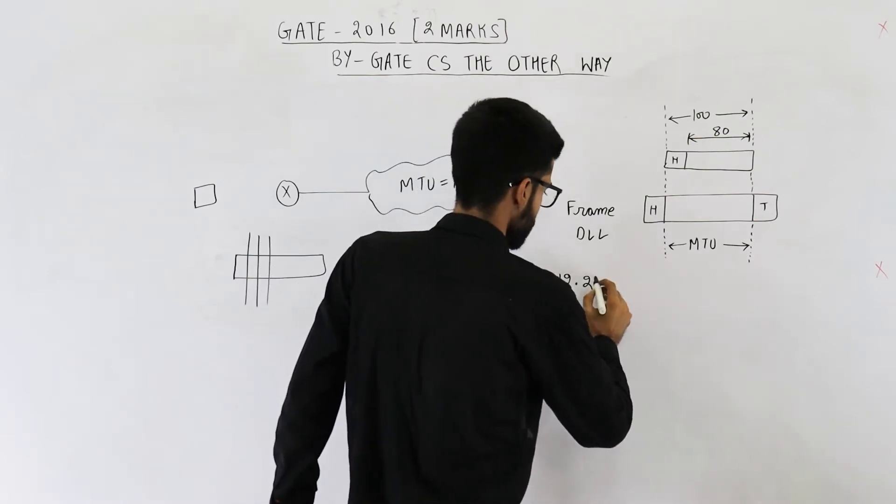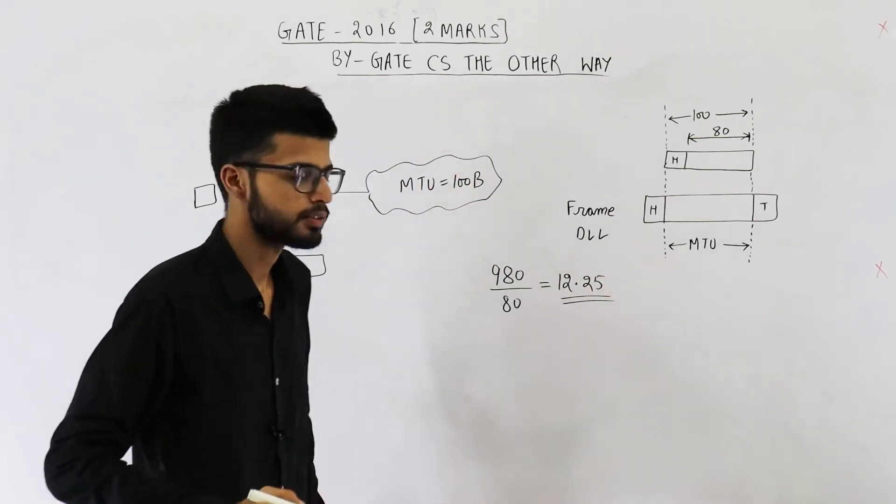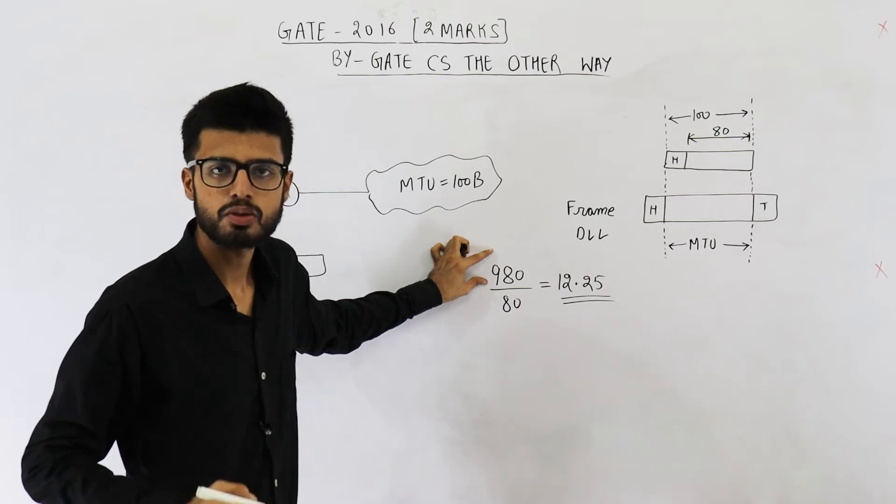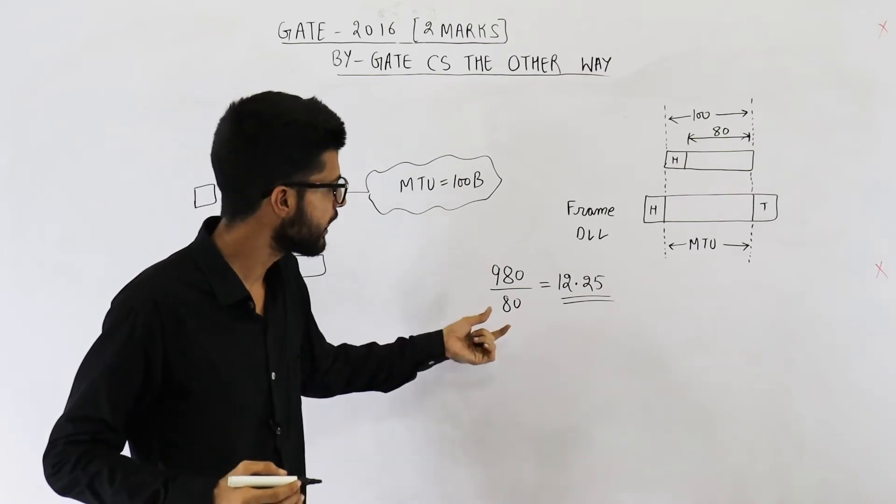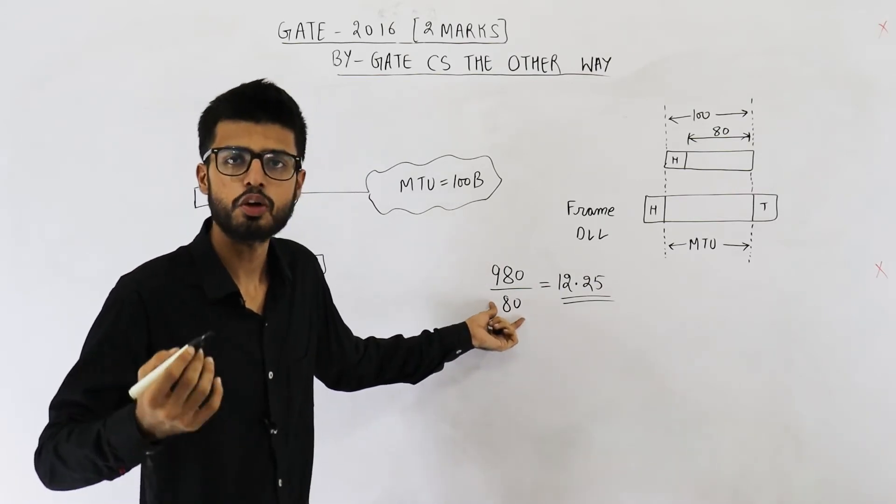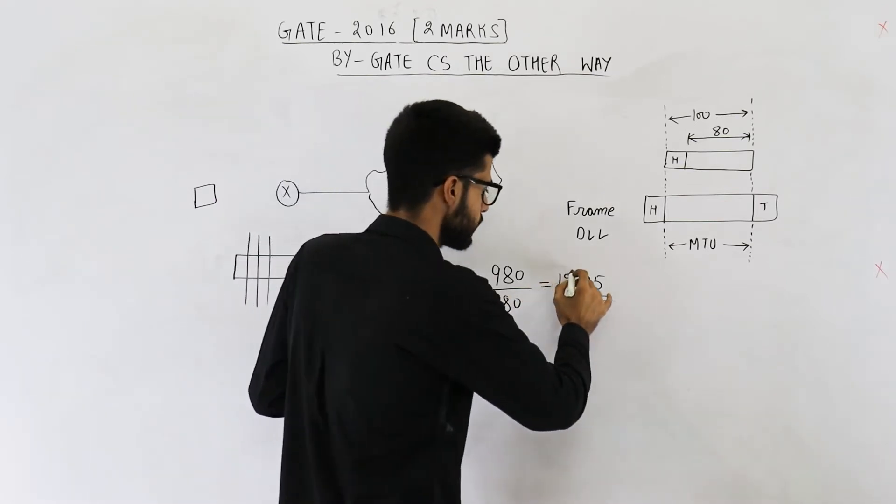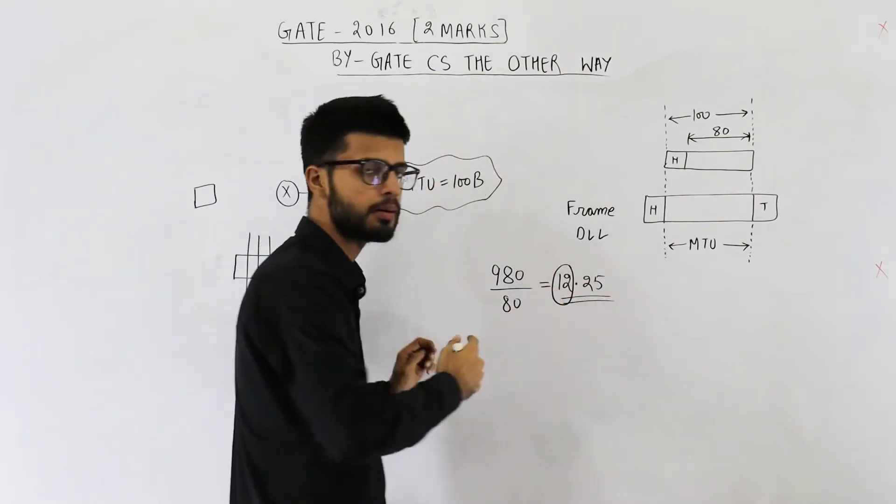Now see, what does this mean? This means if 980 bytes of data is divided into smaller parts, each of 80 bytes, you will get 12 complete parts.